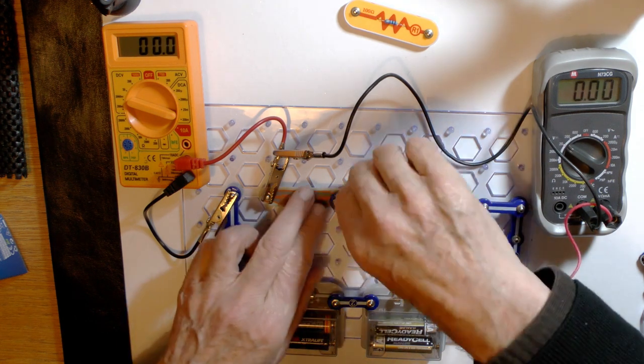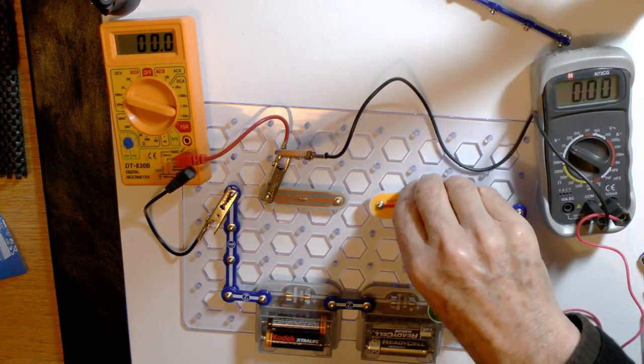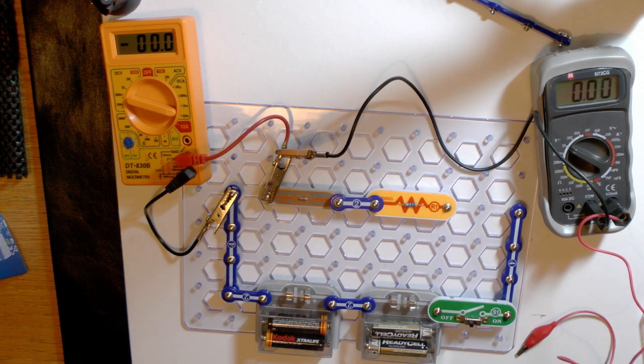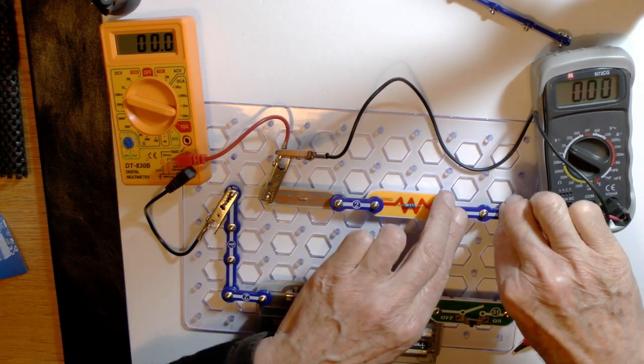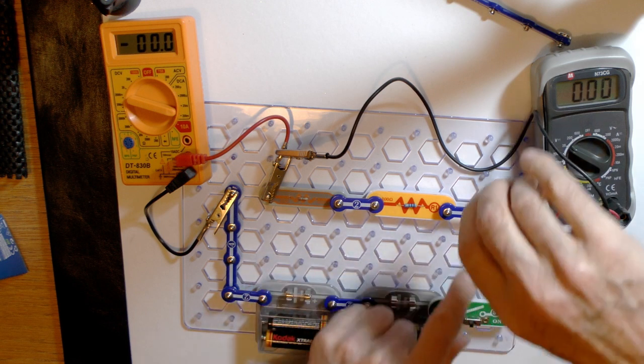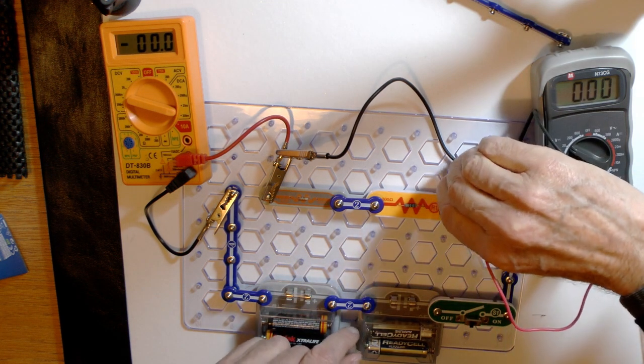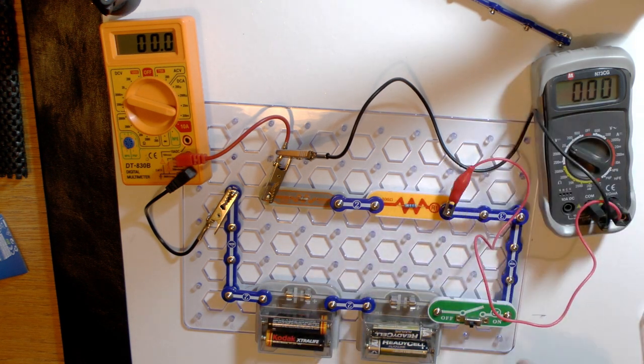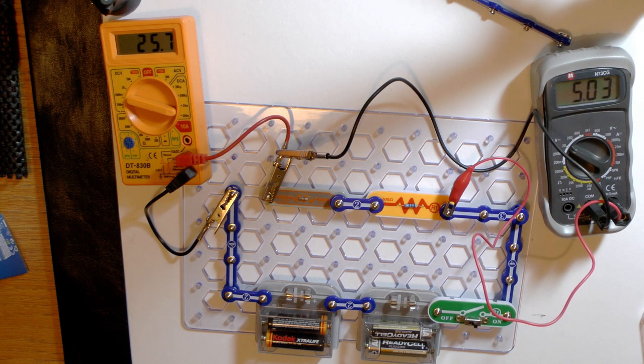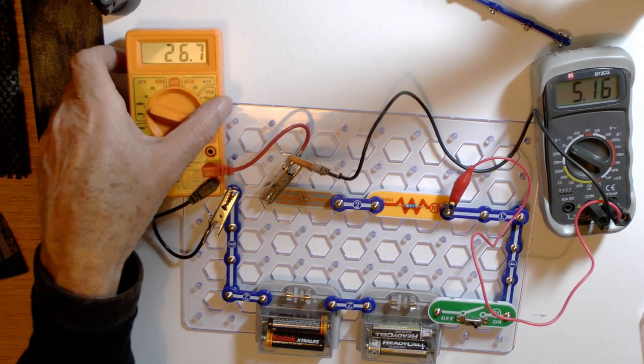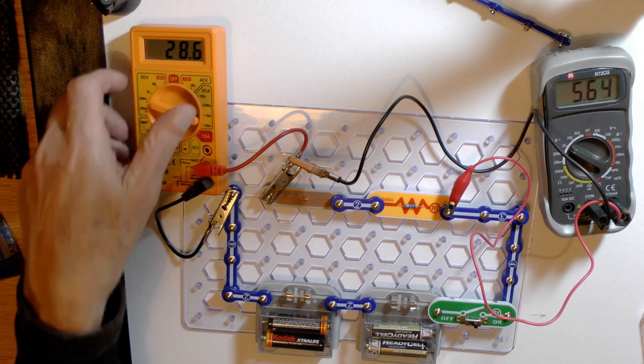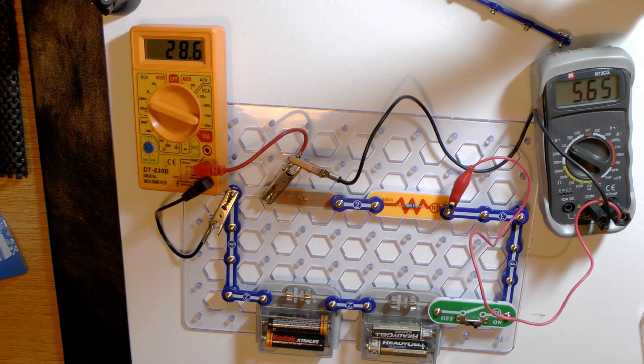Another quick rearrangement to put both the resistors in the circuit one after the other in series. So the current has to flow right through both of them. The voltmeter connected around the two to measure the potential difference across both resistors. So the new readings are 28.6 milliamps and 5.65 volts.